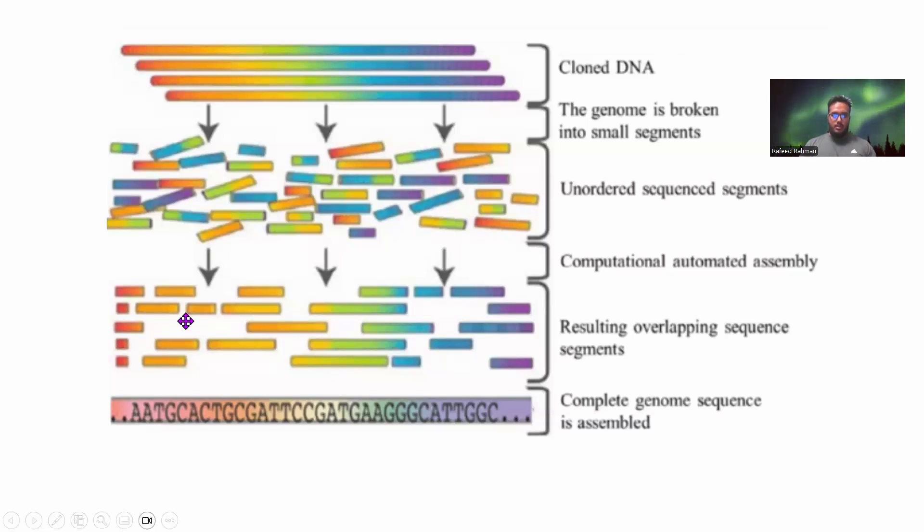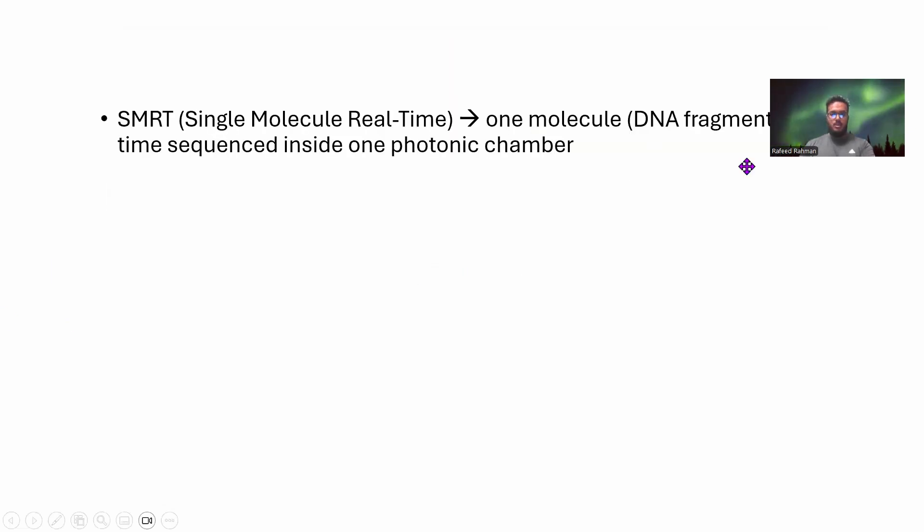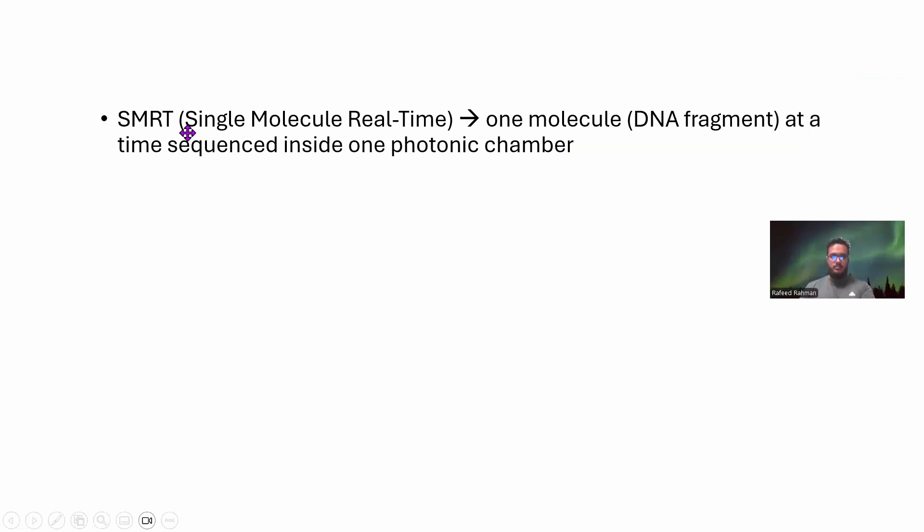So now that we know what sequencing is, let's talk about SMRT PacBio sequencing. SMRT means single molecule real time. Here you basically sequence one molecule, one DNA fragment at a time inside one photonic chamber. The photonic chamber is something which I'm going to discuss in detail. It is a technique for long read sequencing where read length is several kilobases. It can be 2 kilobase, 10 kilobase, and even 15 kilobase.